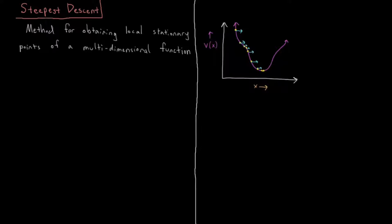This video will discuss the steepest descent method for geometry optimization of molecular structures. Steepest descent is a method for obtaining the local stationary points of a multidimensional function.